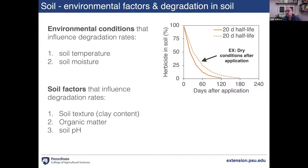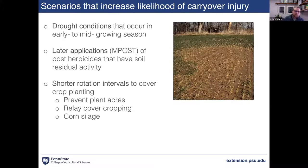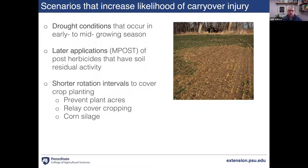Soil pH is somewhat particular to different modes of action and can change the dynamic between water solubility and absorption potential. When thinking about which scenarios raise the likelihood of carryover injury problems, drought conditions after planting and into the middle of the crop growing season are a big driver.